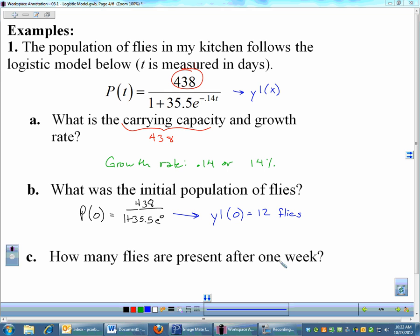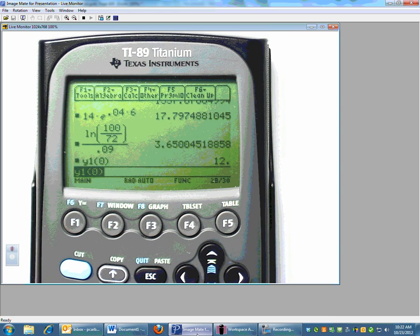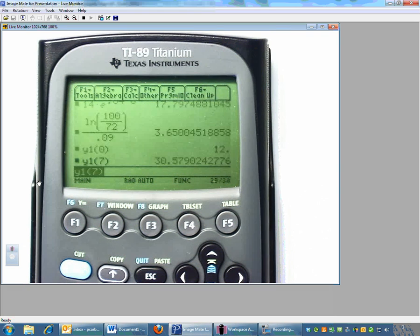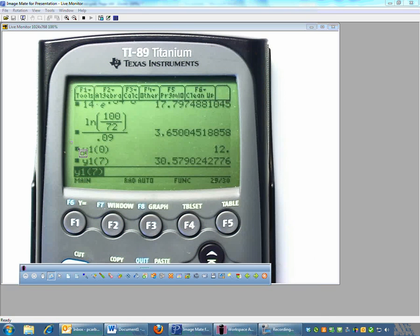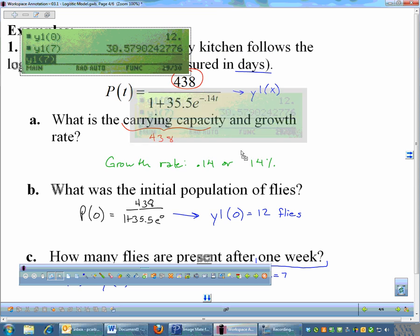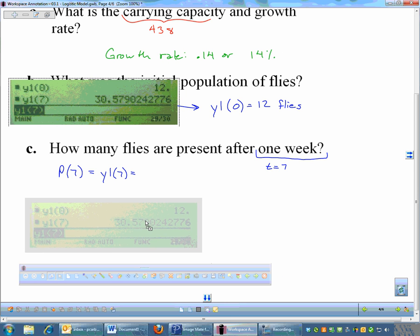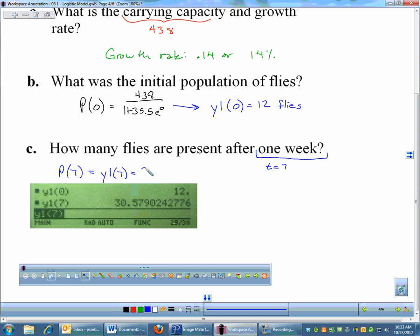How many flies are present after one week? Here I'm giving you a set amount of time. What you need to be careful with is one week, but time is measured in days. So that means T is going to be 7. One week means I need to find P of 7, which in my calculator is the same as Y1 of 7. I'll do Y1 of 7 and we get 30.579. But remember, we are talking about living organisms. We are not going to have a part of a fly. So we will say that the population is 30 flies. They're in the process of creating that 31st one, but right now we only have 30. That's how we're going to use the logistic model.